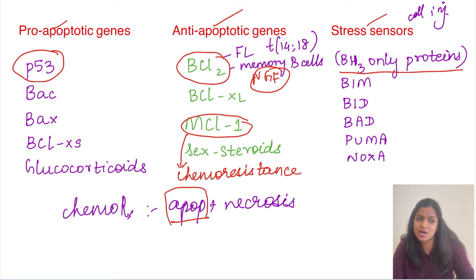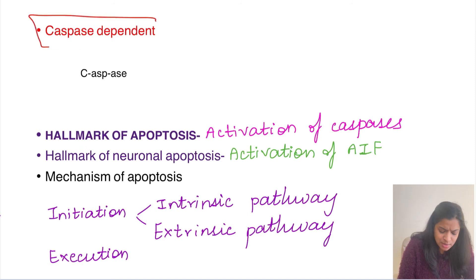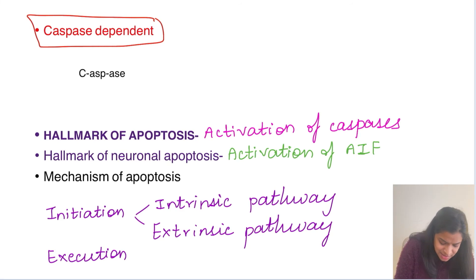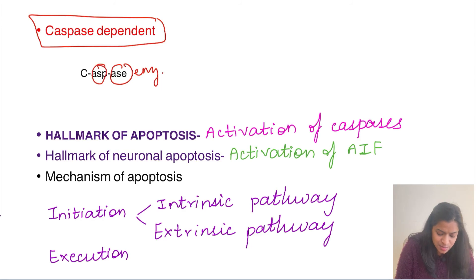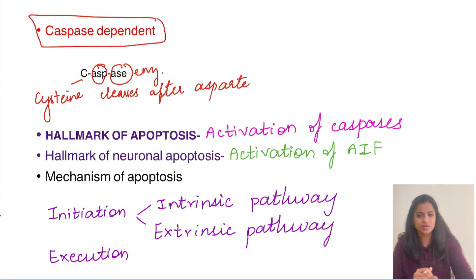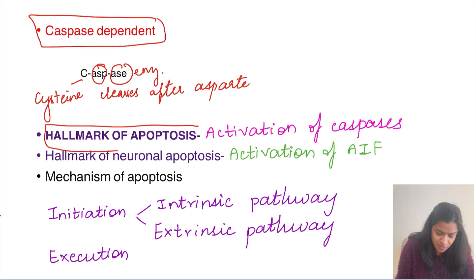Apoptosis is caspase-dependent — this is the most important thing. The final effector leading to cell death is the caspase. Breaking down the name: 'ase' means it is an enzyme; 'asp' means it cleaves after an aspartate residue; 'c' stands for cysteine, which is present at the active site. So cysteine at the active site, cleaves after aspartate residues. Activation of caspase enzymes is the hallmark of apoptosis.